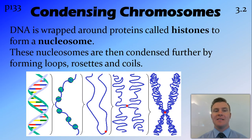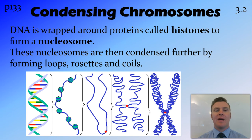The way it's condensed is by taking that single strand of DNA and wrapping it around proteins called histones. Once wrapped around histones, this forms something like a beaded necklace called a nucleosome. These nucleosomes are further condensed using loops, coils, and rosettes to form the chromosome.